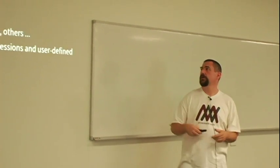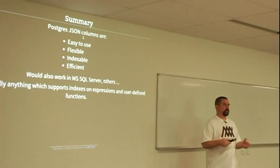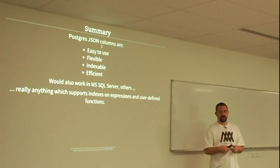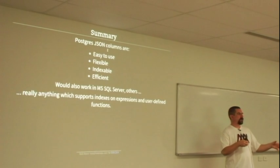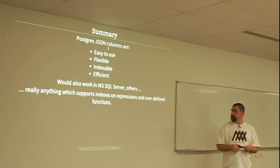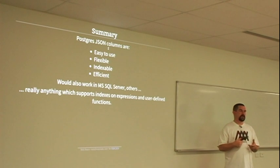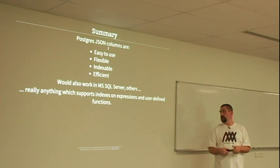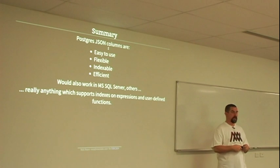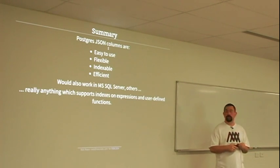In summary, this new JSON data type is actually quite easy to use, very flexible, and — most importantly — it's indexable. That's the biggest revelation: you don't just treat it like dumb data; you can treat it like live data and join across it. It's really quite efficient. Interestingly, this also works in SQL Server — SQL Server supports user-defined functions and indexes on expressions. MySQL hopefully will support that stuff too, though I'm not sure.